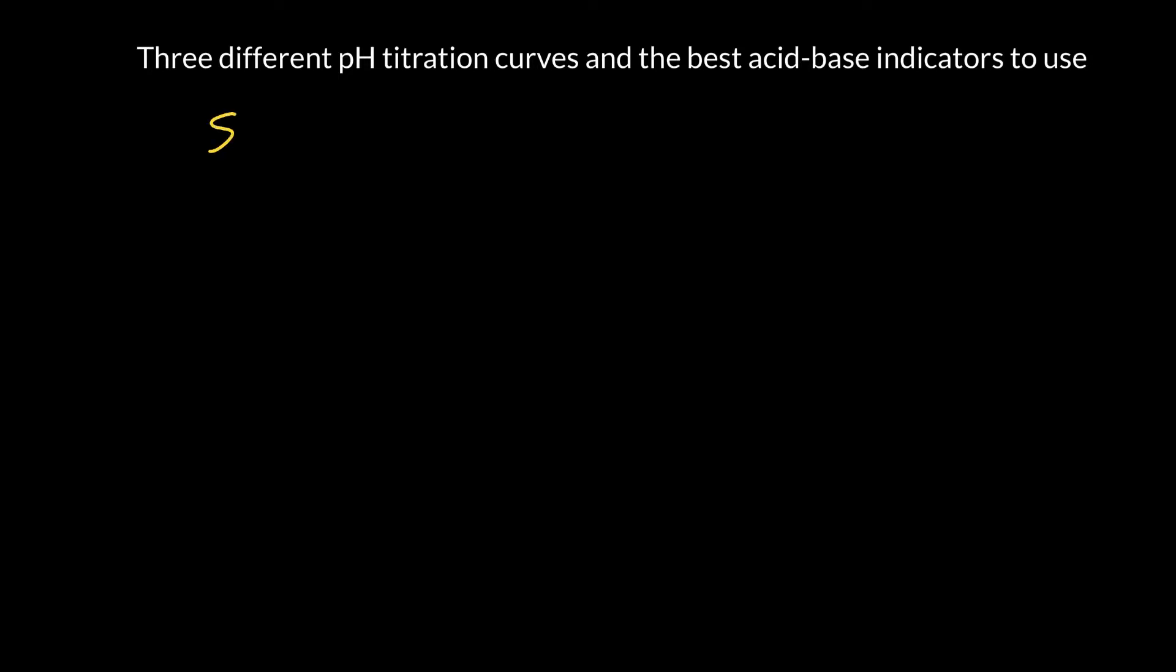We're going to start with the easiest one, a strong acid with a strong base. An example would be hydrochloric acid plus sodium hydroxide. When they react together they form water and sodium chloride. Whenever you've got an ion from a strong acid or a strong base it's going to be neutral. So the sodium chloride salt that we form is going to be perfectly neutral, and at room temperature that corresponds to a pH of about seven units.